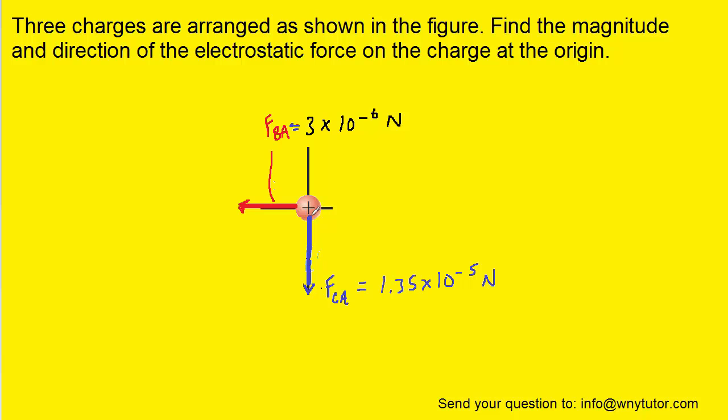To find the resultant force acting on the positive charge at the origin, we have to first align these two forces so that they are in that tip-to-tail fashion. All that means is we're going to grab this force and slide it over. That way, the tip of force BA is aligned with the tail of force CA. The resultant will be drawn from the origin out to the tip of force CA.